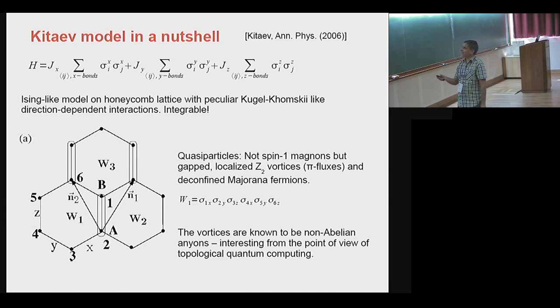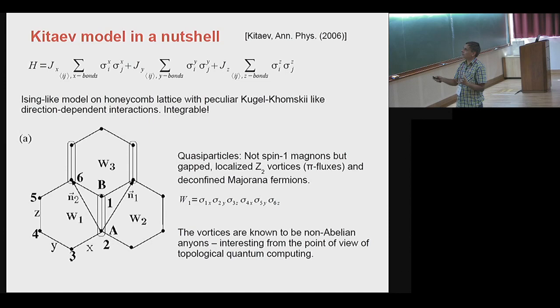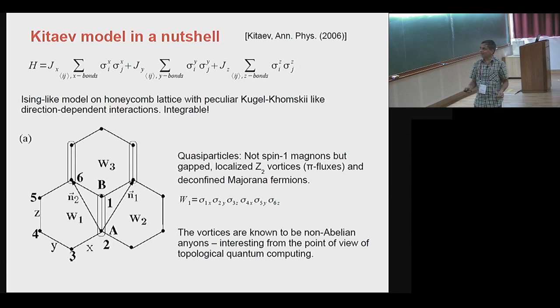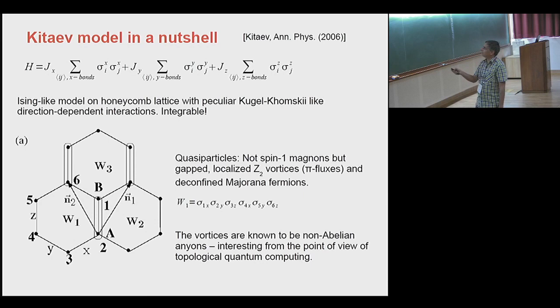What I have is a honeycomb lattice on which at every vertex I put spin-half particles and I allow nearest-neighbor interactions, which in each bond is of the Ising type. There are three types of bonds going out, which I'll respectively call X, Y, and Z. On the X bonds, I allow only the X components of these spins to interact via an Ising X-X interaction, similarly for Y and for Z. This seemingly innocuous change from the usual Ising model has enormous effect on the physics of the model.